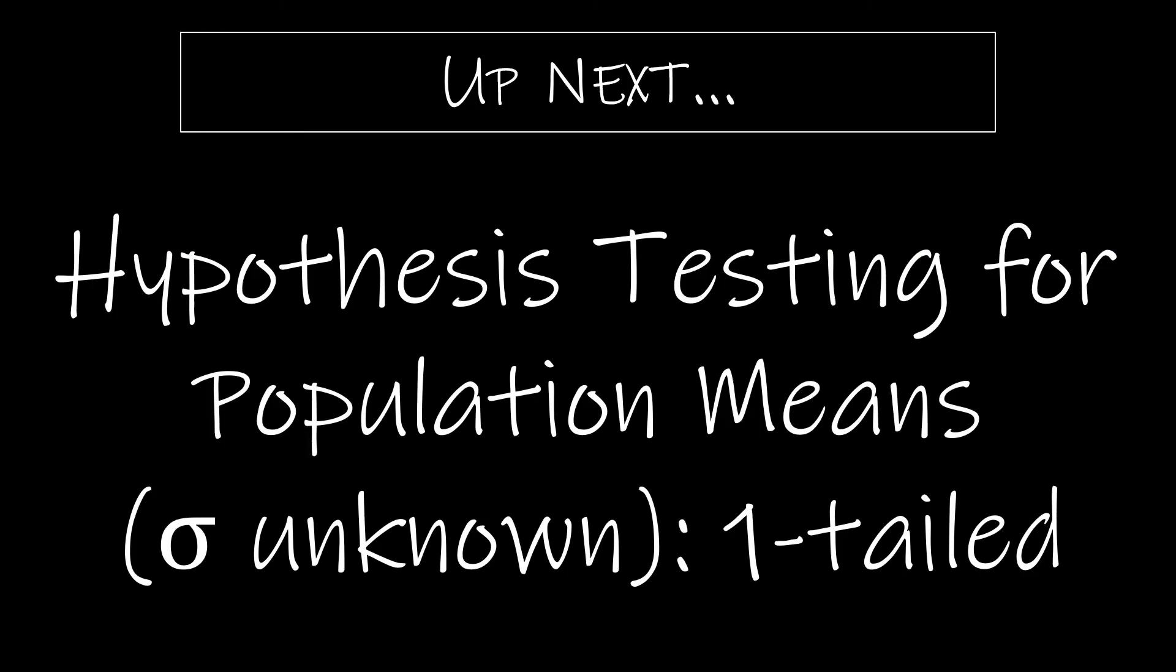Up next, we will take a look at hypothesis testing for population means where sigma is unknown and a one-tailed test. So instead of a normal model, we're going to use a t-model, and we're going to look at left and right-tailed tests.